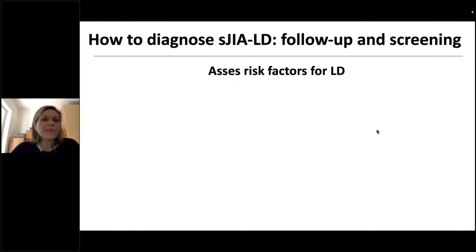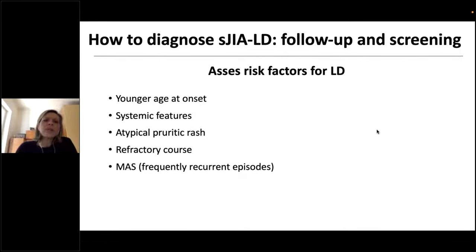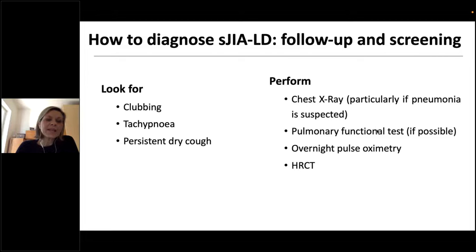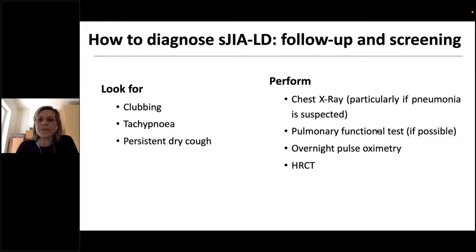How can we diagnose lung disease in sJIA and screen patients? We need to assess risk factors including: younger age at sJIA onset, prevalence of systemic features, atypical pruritic rash, refractory course, recurrent MAS episodes. Laboratory red flags include hypereosinophilia, high hyaluronan levels, elevated CXL9, and HLA-DRB1*15 positivity. Clinically, look for clubbing, tachypnea, and persistent dry cough. Perform chest X-ray particularly if pneumonia is suspected, pulmonary function tests if age-appropriate, overnight pulse oximetry, and high-resolution CT scan.